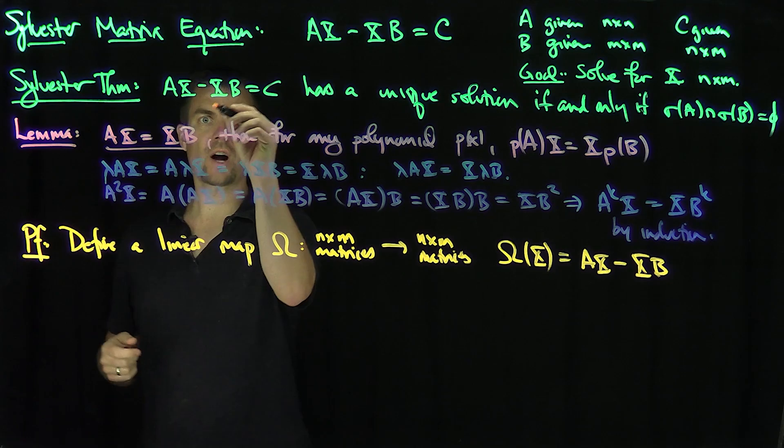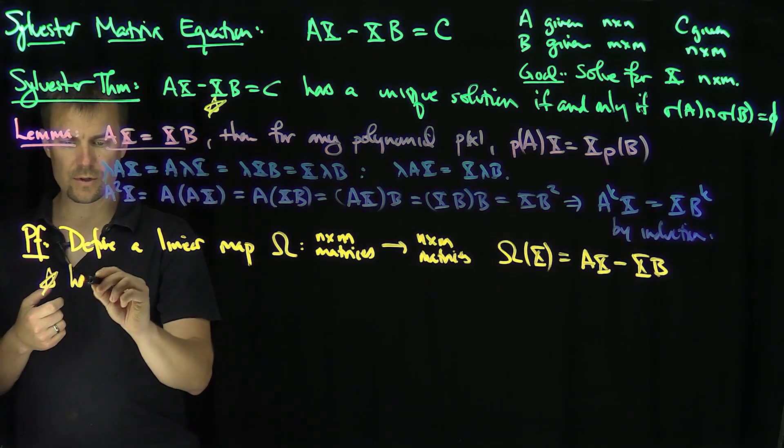Omega of any n by m matrix X is going to be AX minus XB. So our equation star has a unique solution